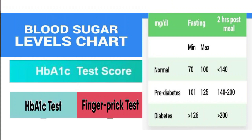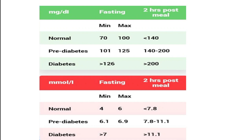A healthy person's normal blood sugar level fasting — that means without food, empty stomach — is a minimum of 70 and a maximum of 100 to 110 mg per dL.